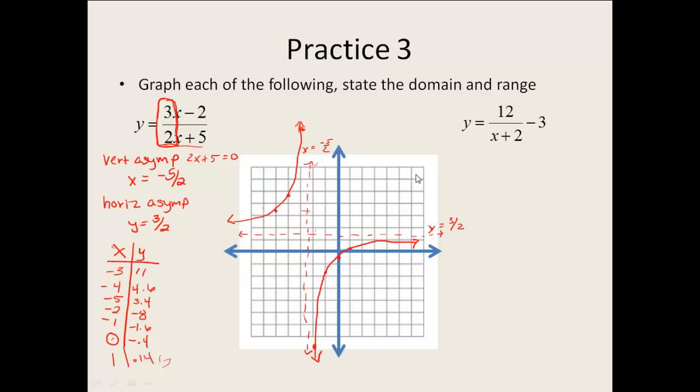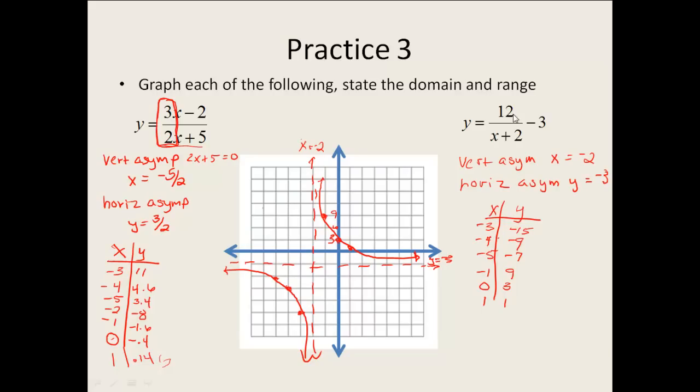Okay, now go ahead and try the second one. Okay, for the second one, it was our form where we had A over X minus H and then plus K. So my vertical asymptote is X equals negative 2 because I have to take the opposite sign of my H. My horizontal asymptote is this negative 3 here. Did my table of values. I picked numbers to the left of my vertical asymptote, numbers to the right of my vertical asymptote.